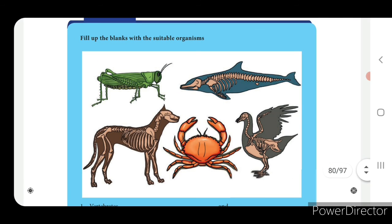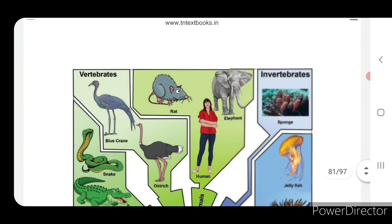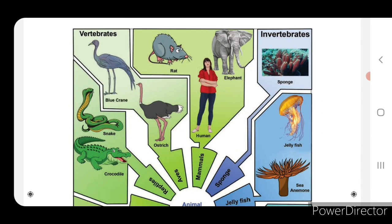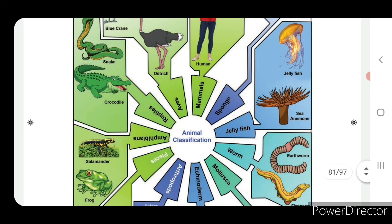A picture is given showing classification with examples: vertebrates, invertebrates, vertebrates with wings. You can fill in the examples from the picture study showing mammals, jellyfish, worms, mollusca, echinodermata, arthropoda, pisces, amphibians, reptiles, and aves.